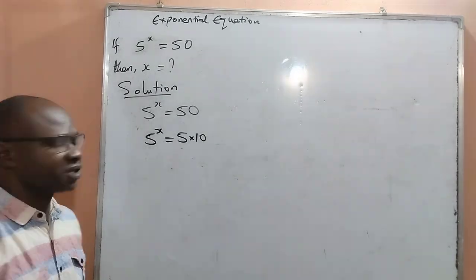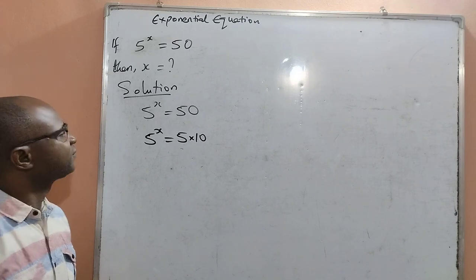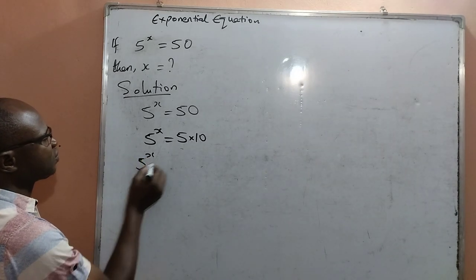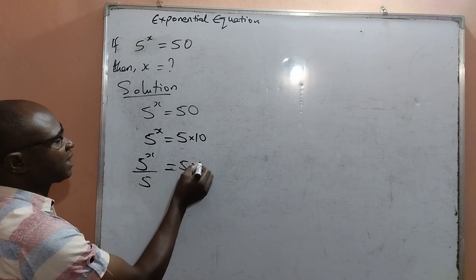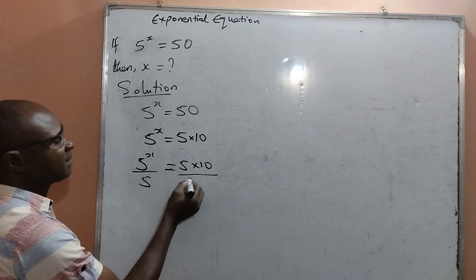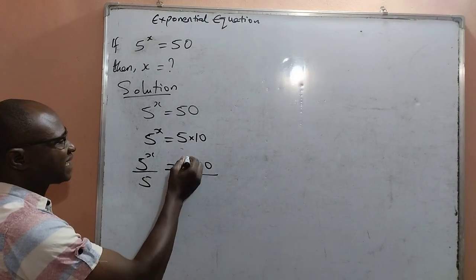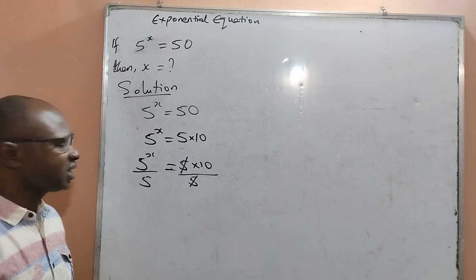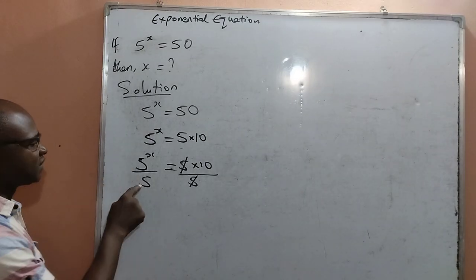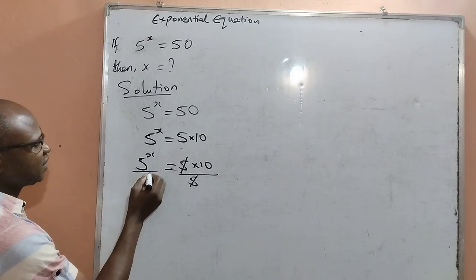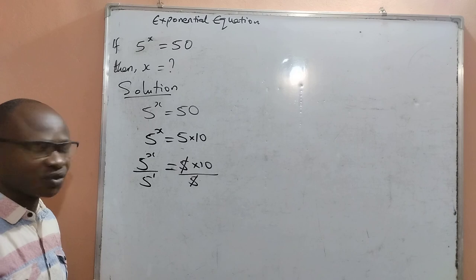At this point I want to divide both sides of the equation by 5 so that I can have 5 raised to the power x all over 5 is equal to 5 multiplied by 10 divided by 5. The reason is because this 5 can cancel out. But also know that 5 is the same thing as 5 raised to the power 1. So even if I write this as 5 raised to the power 1, it is still the same.